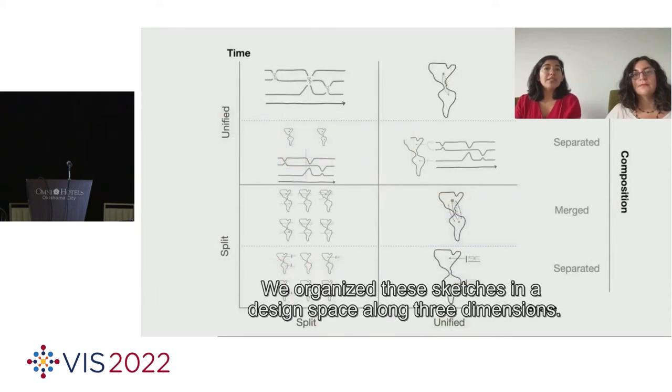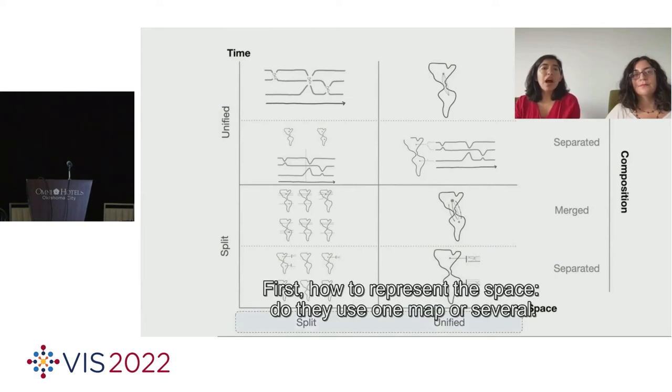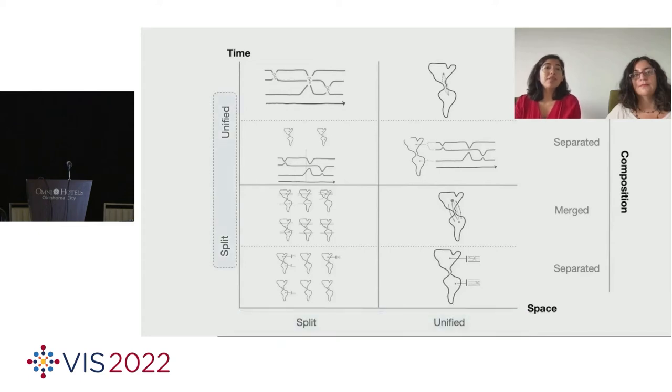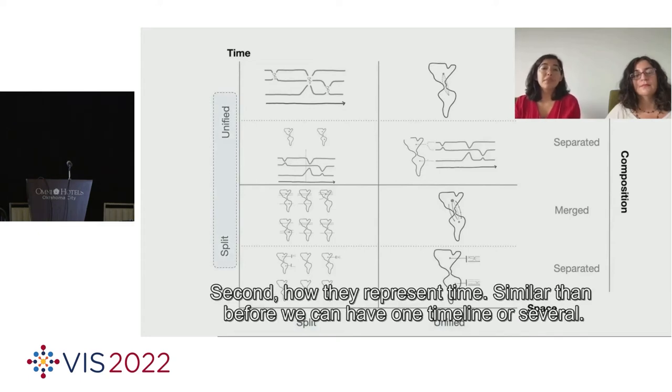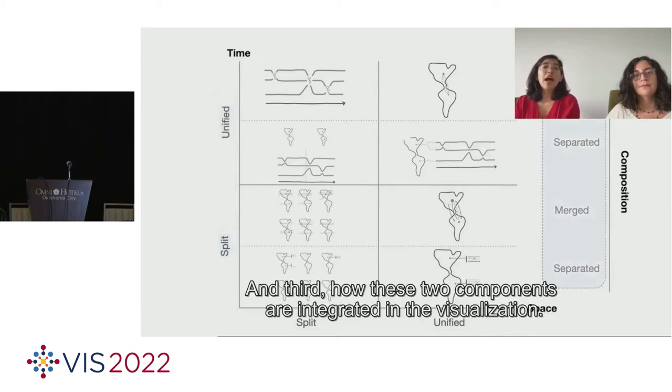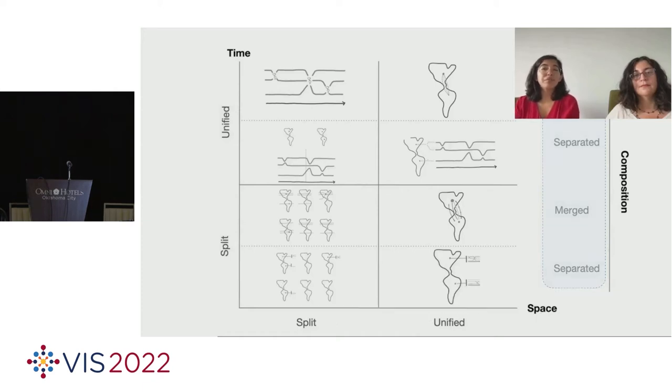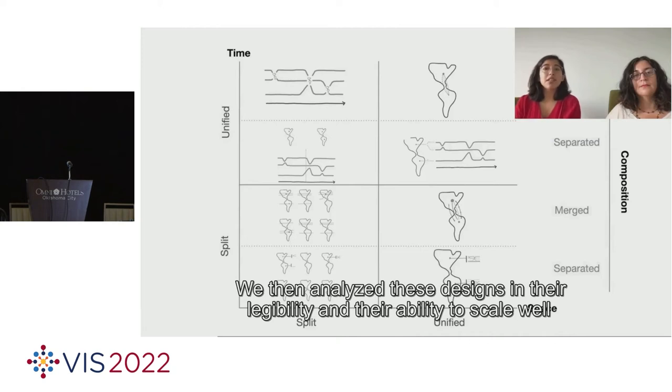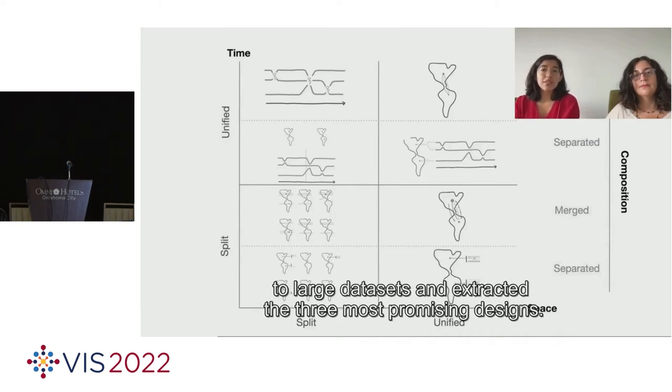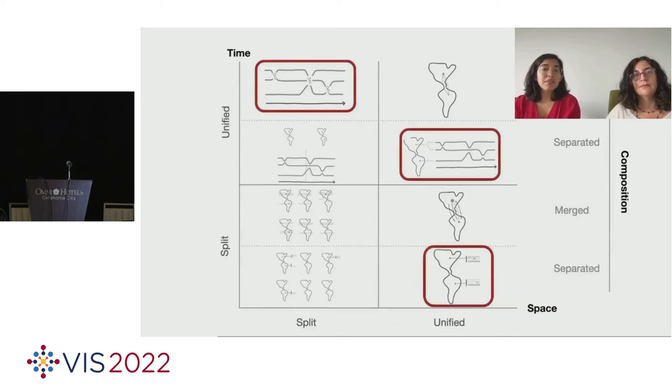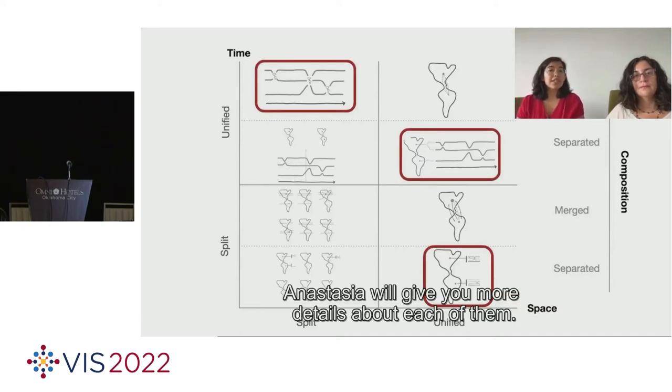We organized these sketches in a design space along three dimensions. First, how they represent space. Do they use one map or several? Second, how they represent time. Similar to before, we can have one timeline or several. And third, how these two components are integrated in the visualization. We then analyzed these designs in their legibility and their ability to scale well to large datasets. And extracted the three most promising designs. Anastasia will give you more details about each of them.